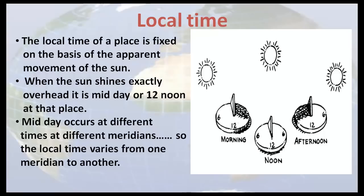The local time of a place is fixed on the basis of the apparent movement of the sun. When the sun shines exactly overhead, it is midday or 12 noon at that place. Midday occurs at different times at different meridians. So, the local time varies from one meridian to another.